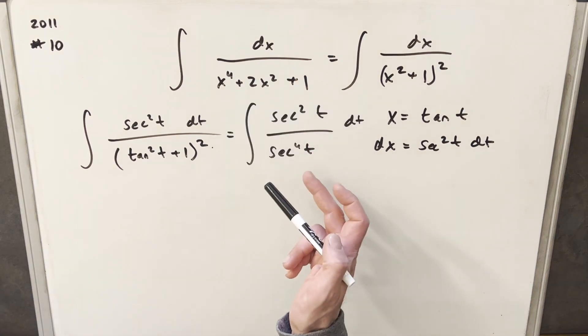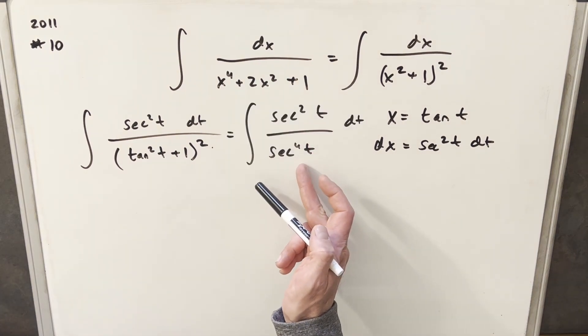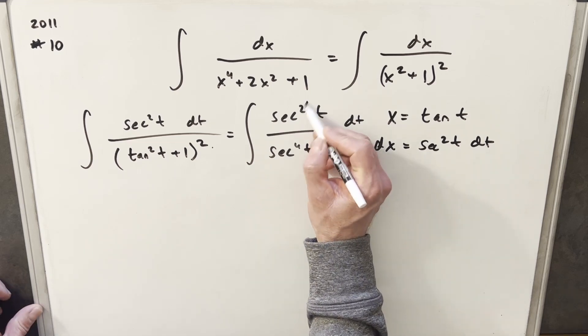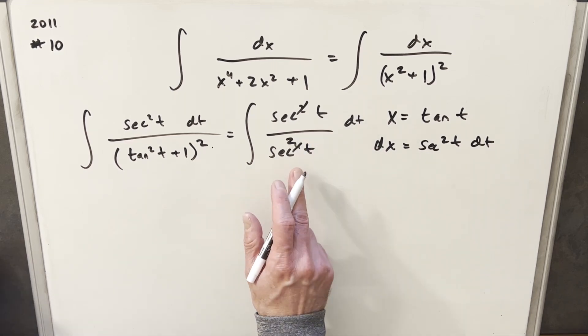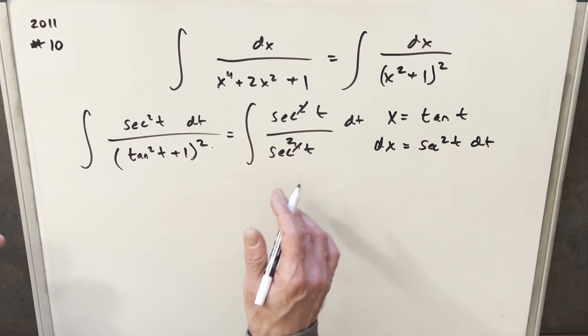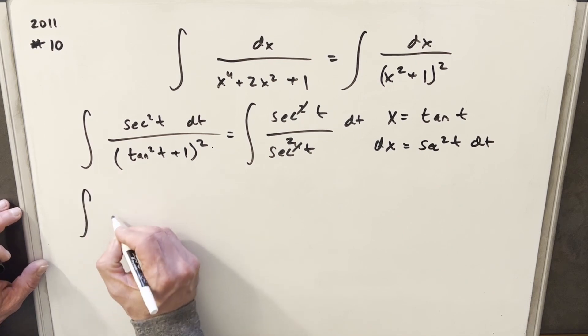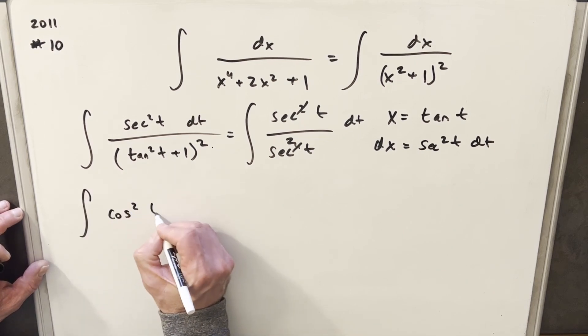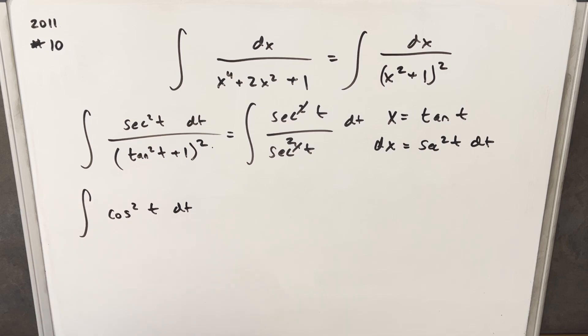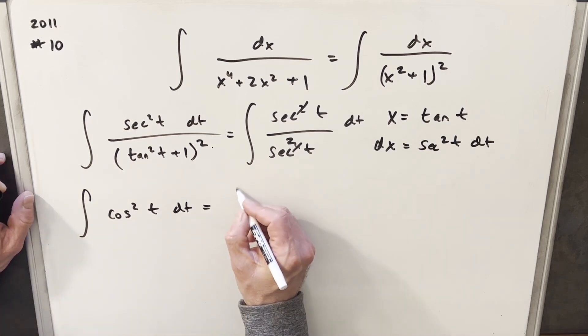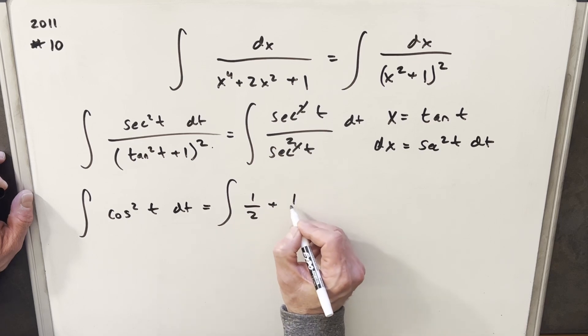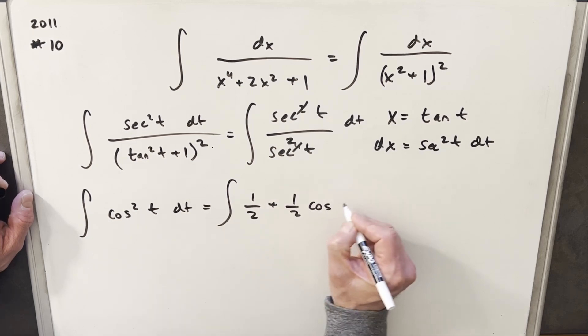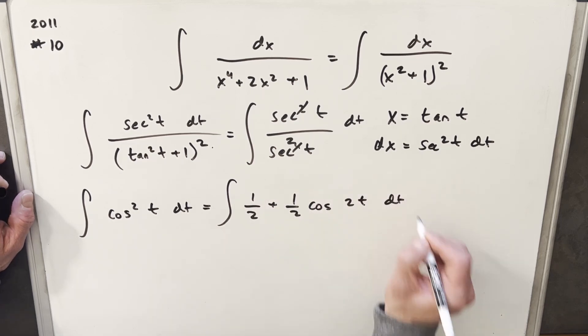Now, from here, with a secant squared on top and a secant to the fourth in the denominator, we can actually cancel two of these and write this as secant squared. And the nice thing about that is 1 over secant squared, secant squared is 1 over cosine squared. In the denominator, that's just going to give us cosine squared t dt. And from here, integrating this is really not too bad because we can use our double angle formula and rewrite this as half plus half cosine 2t dt.